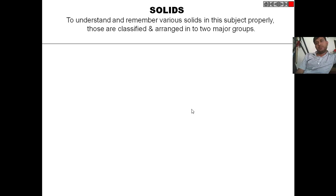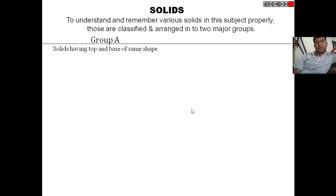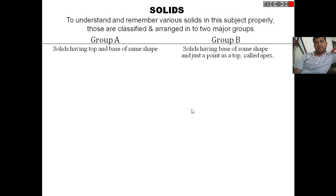To understand and remember various solids properly, we should first see the classifications of the basic two major groups. Group A shows that the solid has two bases having the same shape. Group B contains solids having one base and one point at the top, called the apex.